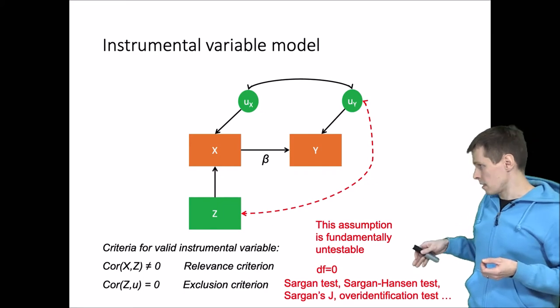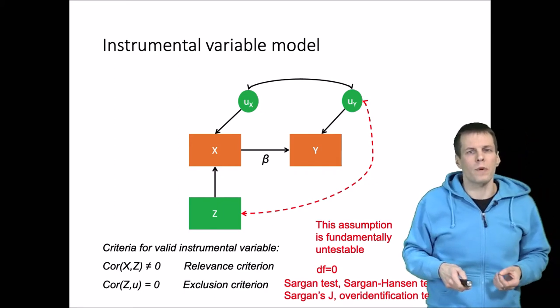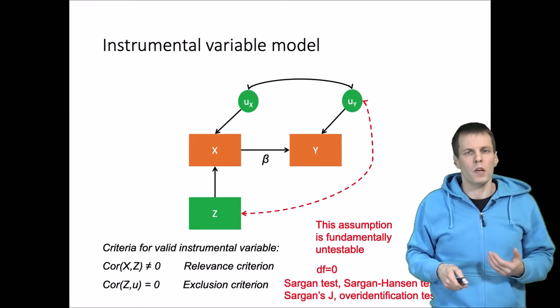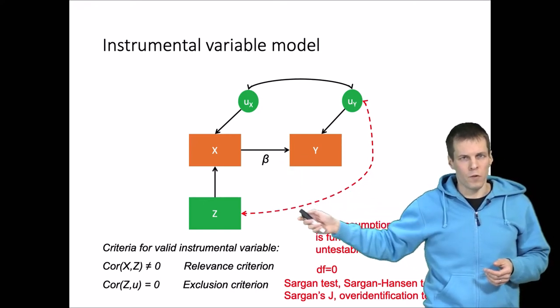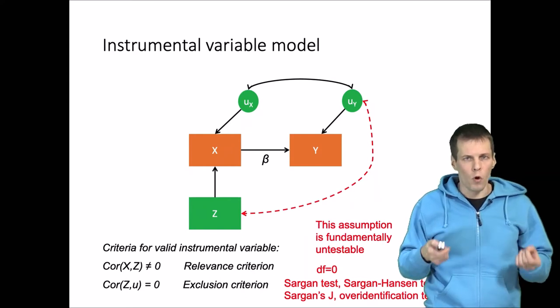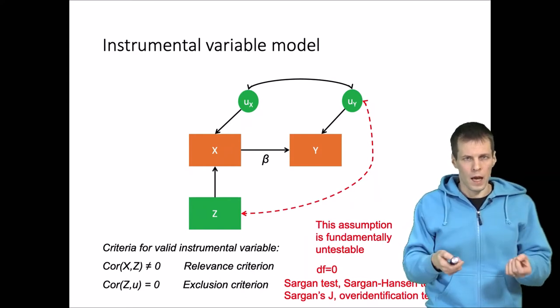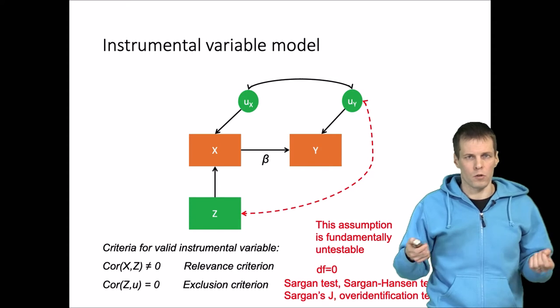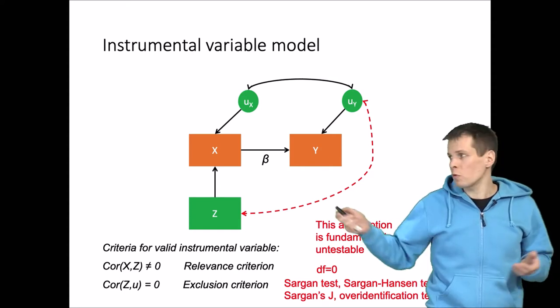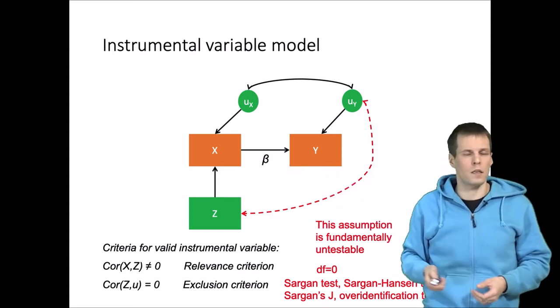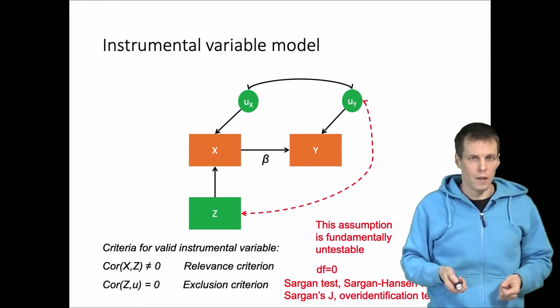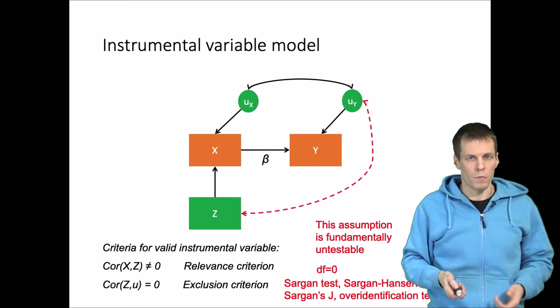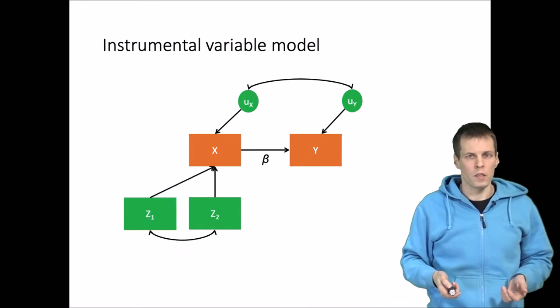These tests will require that you have more instrumental variables than you need. So here we have one endogenous variable and we need one instrument for estimation. If we have more instruments than what we need for estimation, then our model is over-identified. If you have two endogenous variables, two x's here, then we need two instruments. If we have three, then we have an over-identified model. So let's add one more instrument to the analysis.